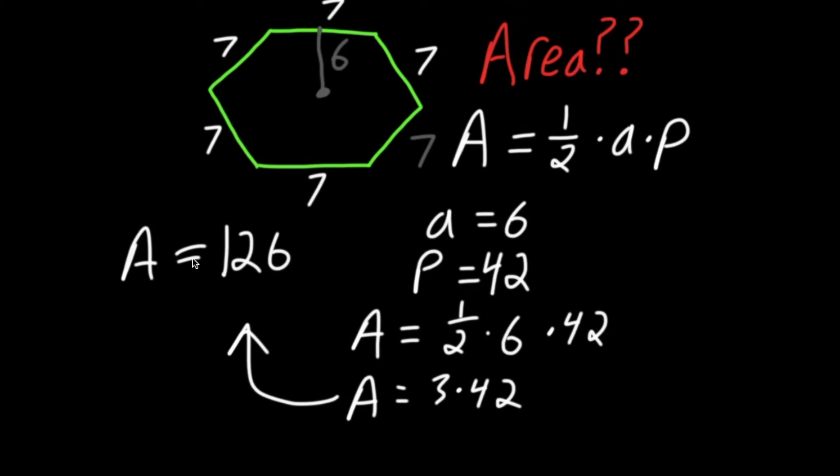So our area is 126, whatever units we're using, say centimeters, and squared because it's area. And that's how you find the area of a hexagon.